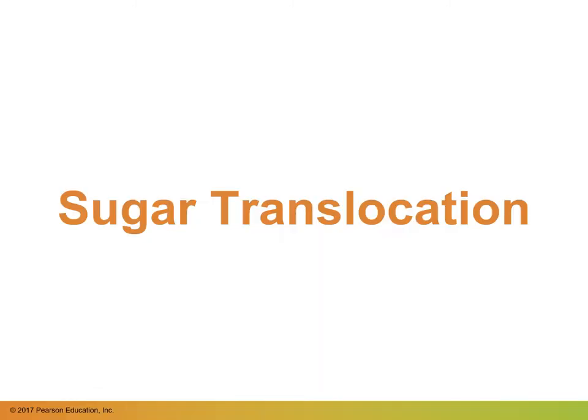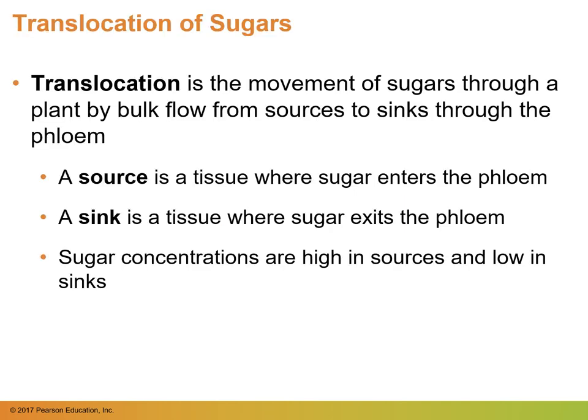Now we'll be focusing on sugar translocation — how sugar is transported in a plant through the phloem. Translocation is the movement of sugars through a plant by bulk flow from sources to sinks through the phloem. A source is a tissue where sugar enters the phloem and a sink is a tissue where sugar exits the phloem. Sugar concentrations are high in a source and low in sinks, and sources and sinks aren't just one way.